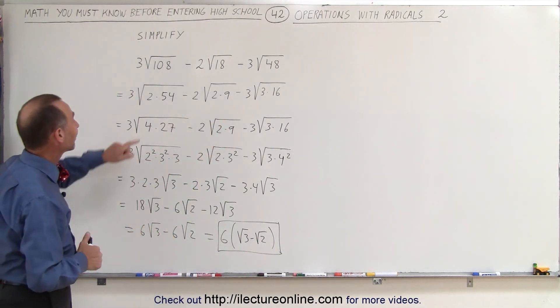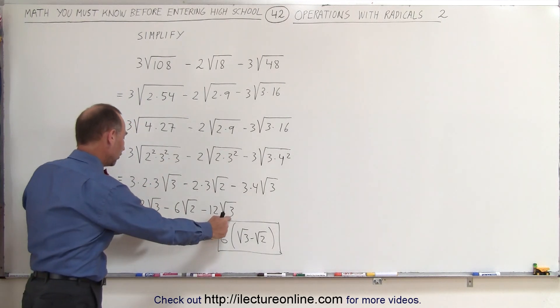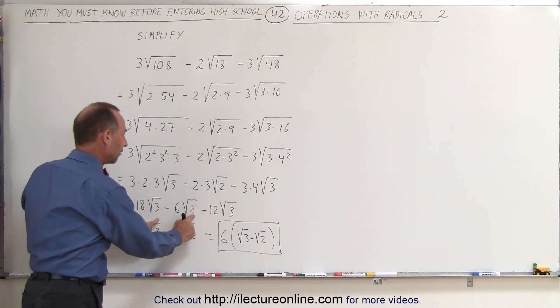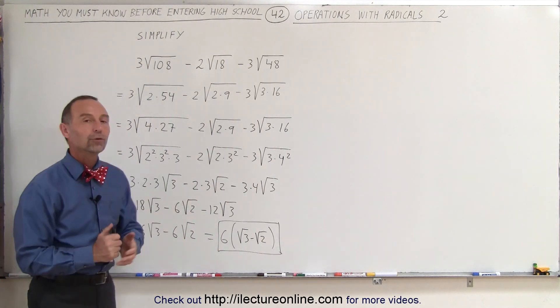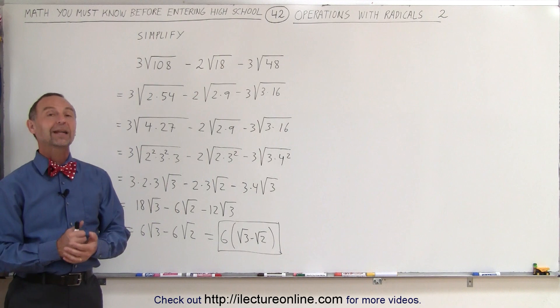Again, the goal always is to get the same number underneath the radical so you can combine them. Wherever you have that, you combine those, but if you don't have the same number underneath the radical, of course, that becomes its own term by itself. And that's how we simplify radical expressions.